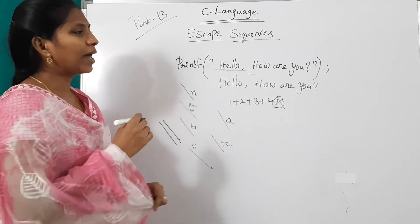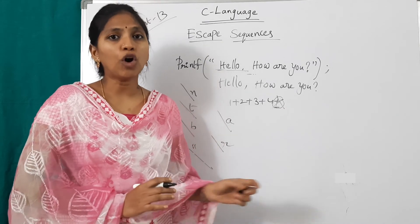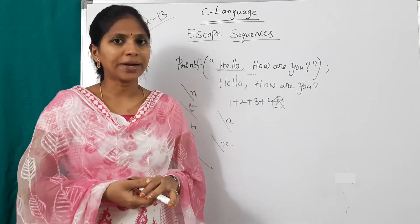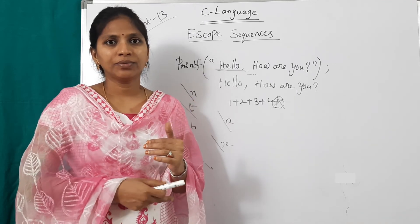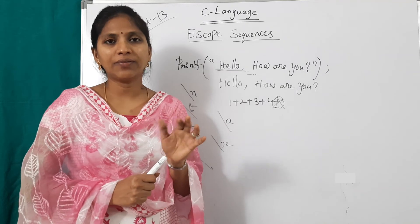These are escape character sequences. Escape characters are used to format the output screen. There are different types of escape characters. Slash n. This is very important. Slash n is for next line. And slash t for tab space.